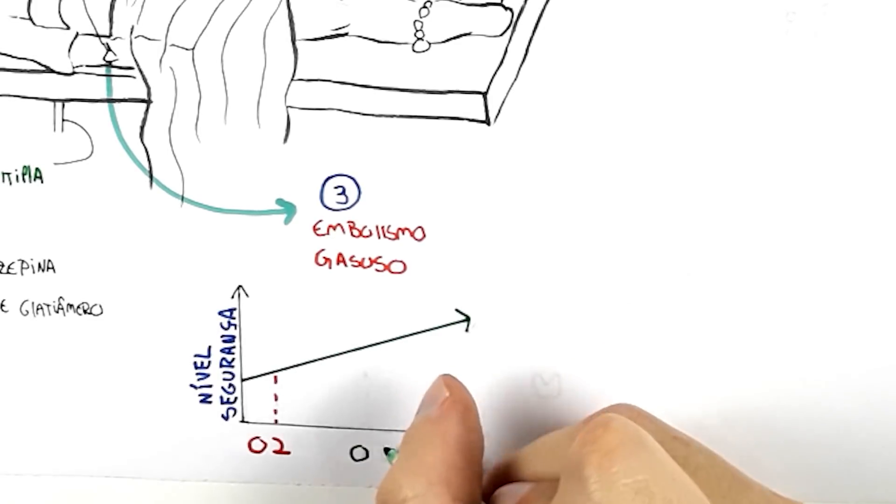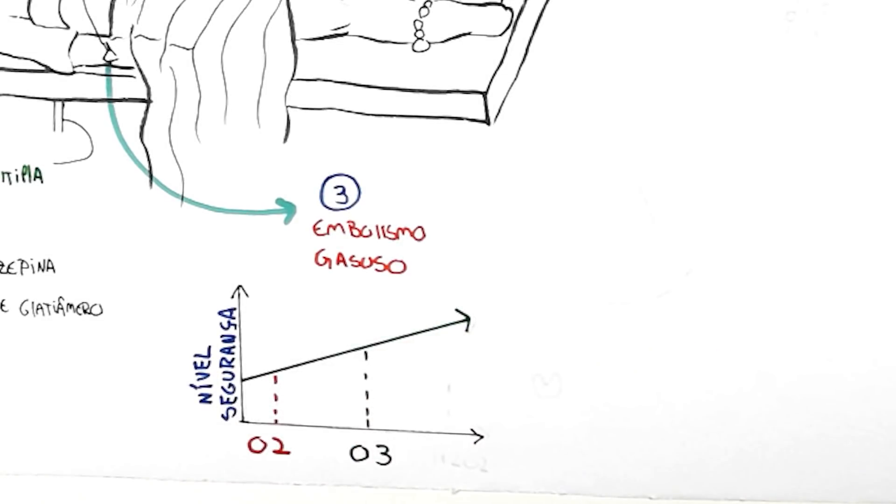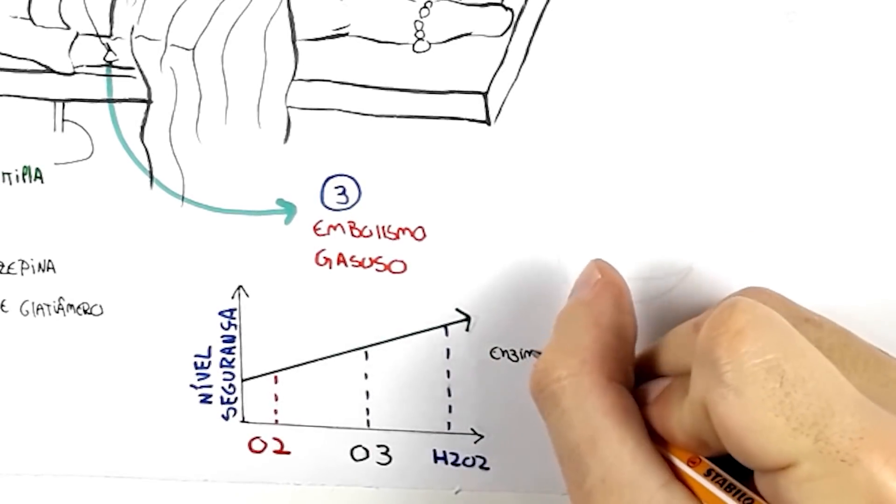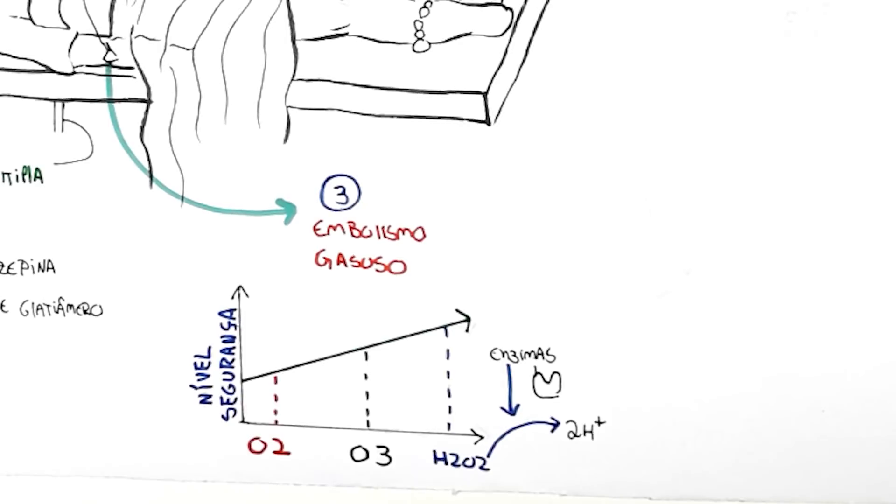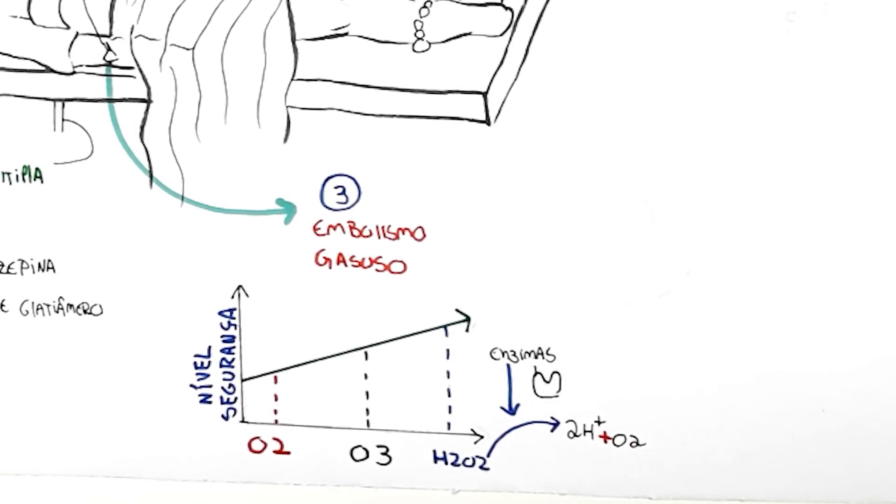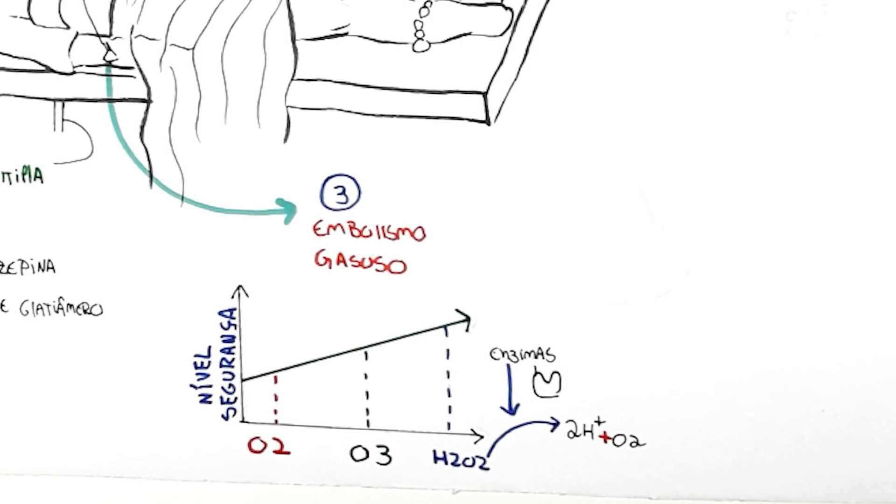Then there is ozone which dissolves 10 times faster than oxygen, which is even more secure. And hydrogen peroxide is more secure than ozone. As soon as it falls into the blood, enzymes will quickly hydrolyze it and transform it into hydrogen and oxygen. Is there still any possibility of causing gas embolism? Only a high dose that I believe would be impractical because it would burn the veins due to the low pH of hydrogen peroxide.